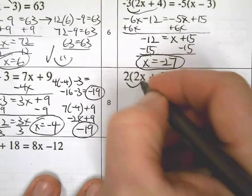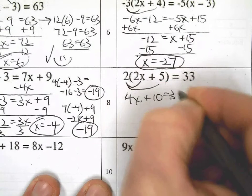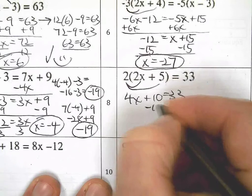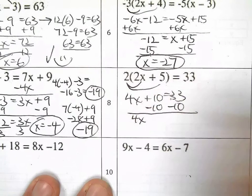I forgot to circle my answers. I get a little OCD about that. Distributive property. 4x plus 10 equals 33. There's still three minutes left before lunch is over. I think I can do this. I have to keep up the pace.